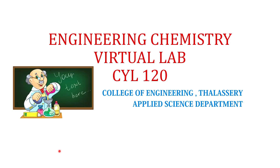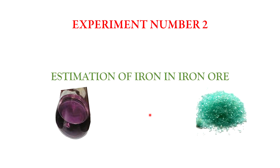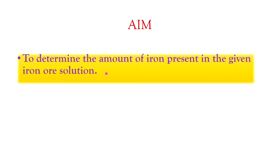Hello, good morning students. Welcome to the video tutorial. Today we are going to discuss Engineering Chemistry Virtual Lab, CYL 120 - Experiment Number 2: Estimation of Iron in Iron Ore. We are using iron ore and ferrous sulphate. The aim is to determine the amount of iron present in the given iron ore solution.